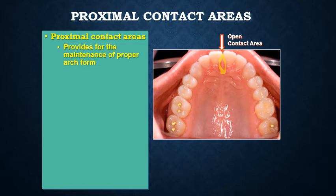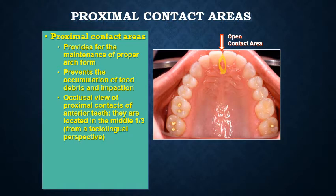Proximal contact areas are needed to maintain proper arch form. When we are eating or chewing, masticatory forces are distributed throughout the whole arch from one tooth to another through these contact areas. Contact is also essential for the health of the gum and gingiva, and it prevents the accumulation of food debris and impaction.